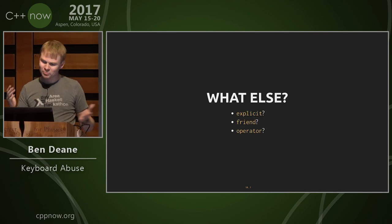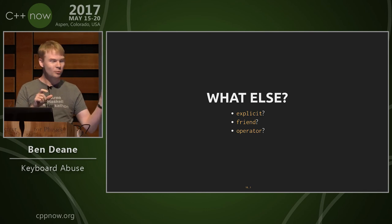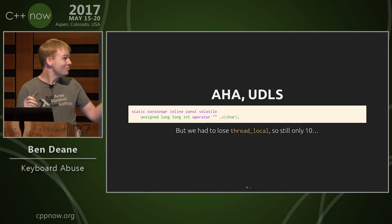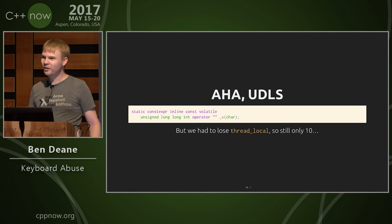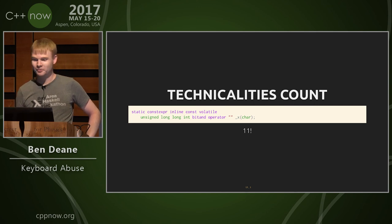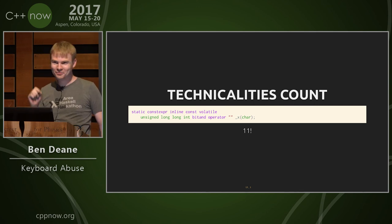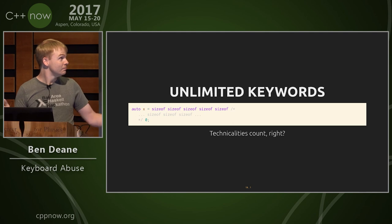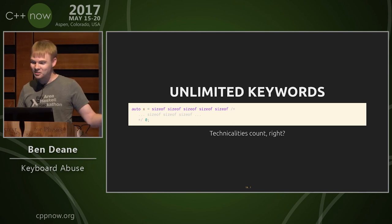Then you start thinking about other things, but all these kind of allow you to gain things on one side and lose things on another. Then I thought, well, I've been writing loads of constexpr stuff and operators, but I still want to use thread_local — so I'm at 10 and thinking, what else? Technicalities count, so I can slip in sizeof. But then I realized the real answer: aleph null — because technicalities count, sizeof as many times as you like. Thank you very much.